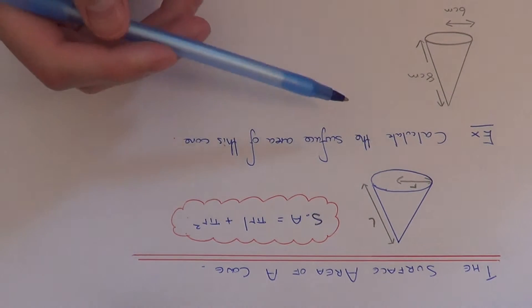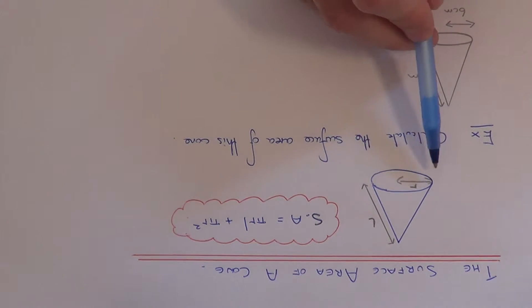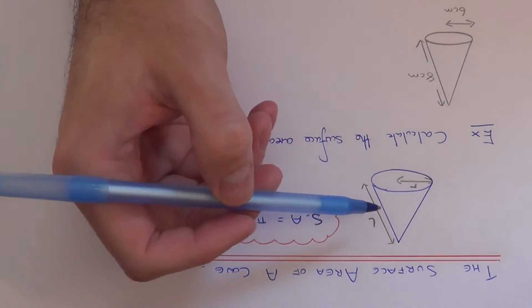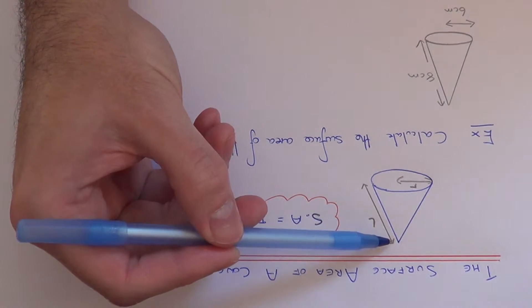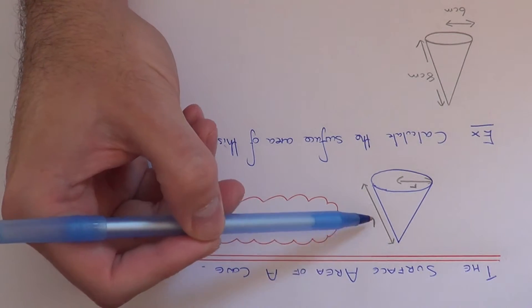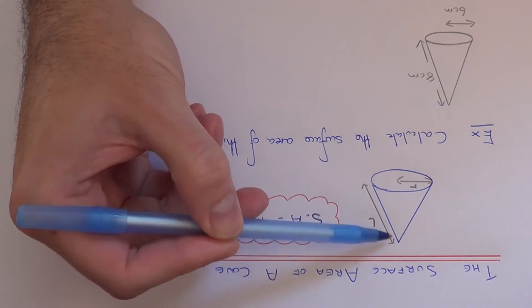In order to find the surface area, we'll need to know what the radius of the cone is. That's the radius of the circle at the bottom of the cone. And we also need to know the slanted height of the cone. So I've called this L in the diagram here.